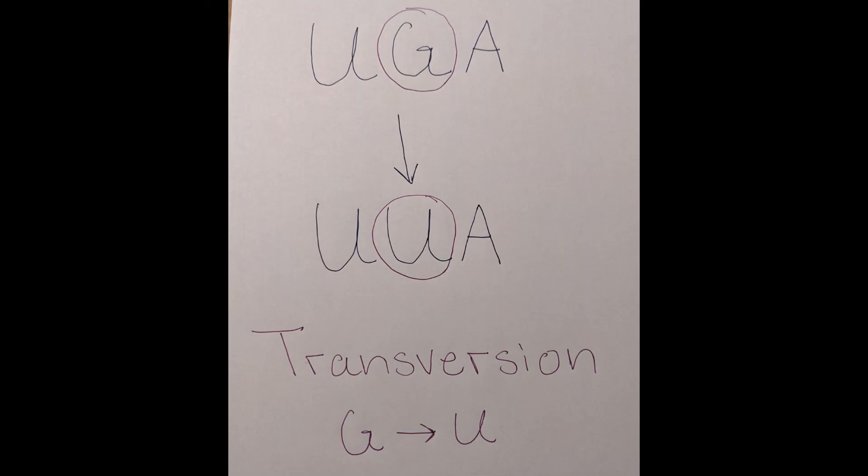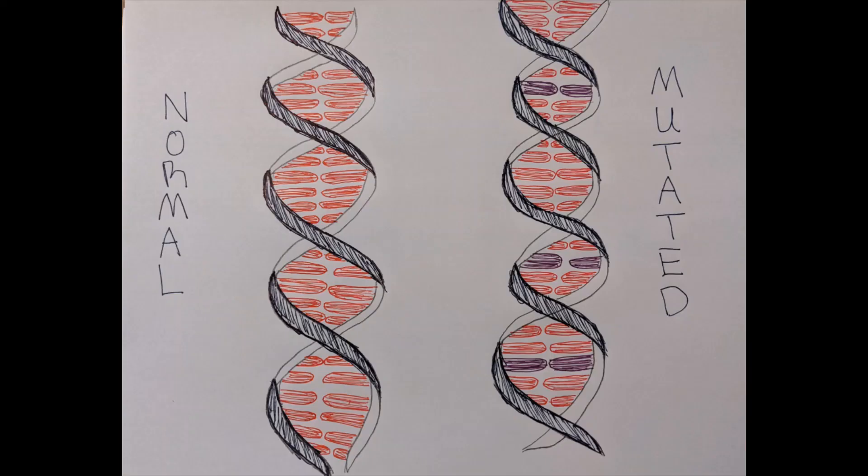In this mutation, you see a guanine substituted for a uracil. This is a transversion mutation because a purine was exchanged for a pyrimidine. The stop codon now becomes leucine and continues the sequence.